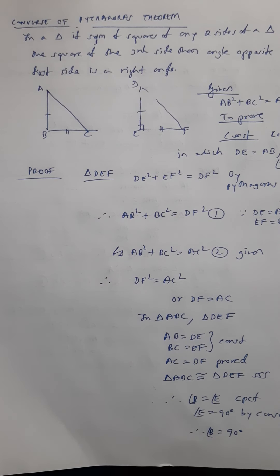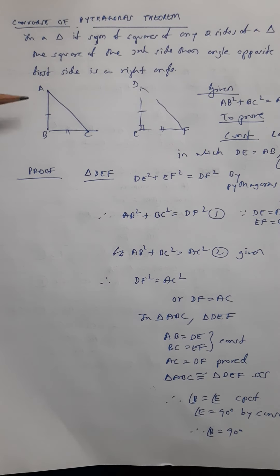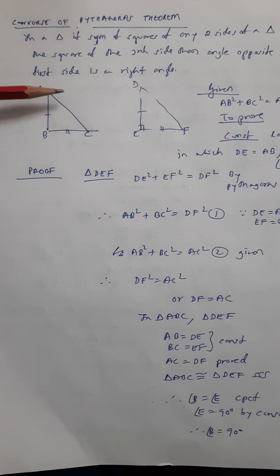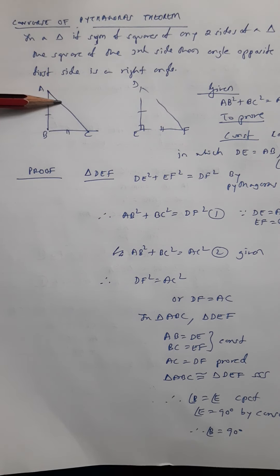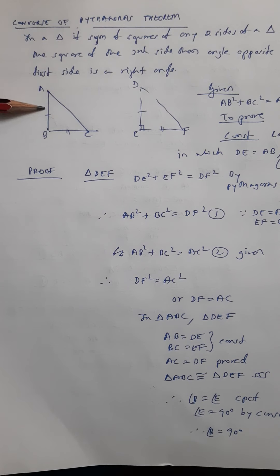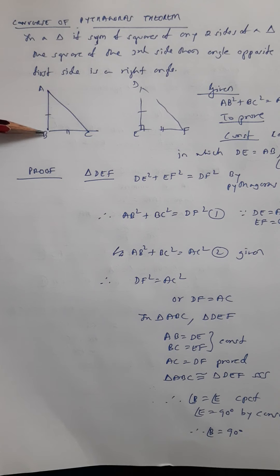This is the fourth and final theorem of the chapter: the Converse of Pythagoras Theorem. It states that if the sum of squares of two sides of a triangle is equal to the square of the third side, then the angle opposite to that side is a right angle.